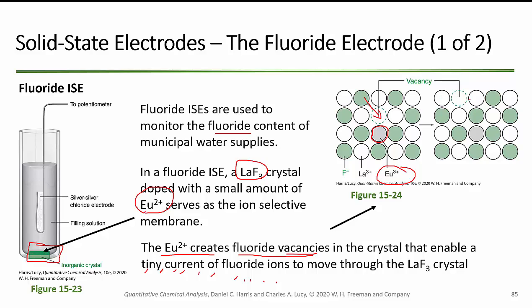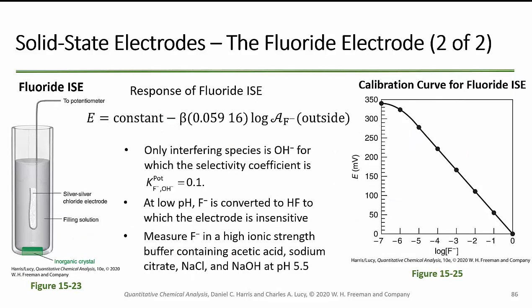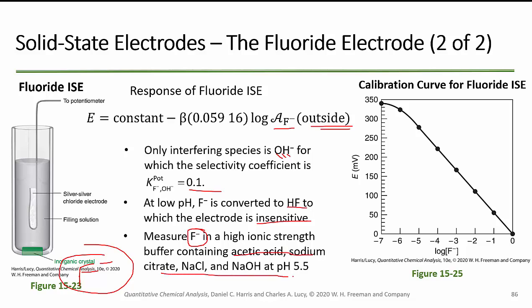The Eu²⁺ creates vacancies in the crystal that enable a tiny current of fluoride ions to move through the lanthanum fluoride. Europium creates a little hole, some fluoride ions move into those holes, a new vacancy occurs, and another fluoride can move. Because fluoride has a minus charge, moving charges is a current. For this crystal-based ISE, the potential equation is some constant minus another constant times 0.0592 times the log of the activity of fluoride on the outside. The only interfering species is hydroxide, with a selectivity coefficient of 0.1. At low pH under acidic conditions, fluoride is converted to HF, to which the electrode is insensitive, so we measure F⁻ in a high ionic strength buffer at about pH 5.